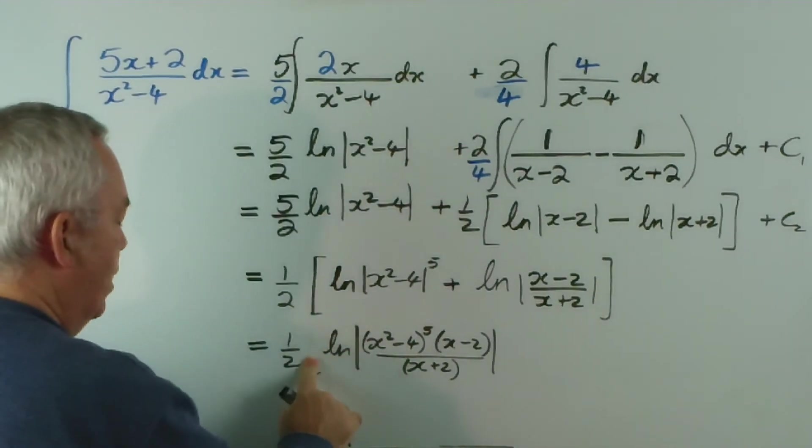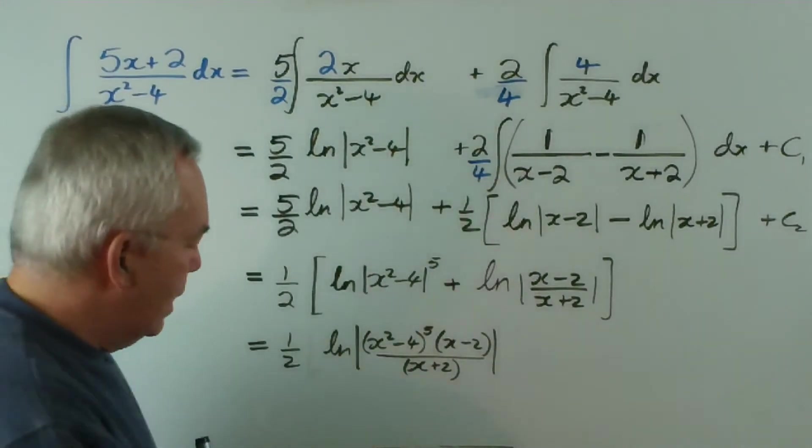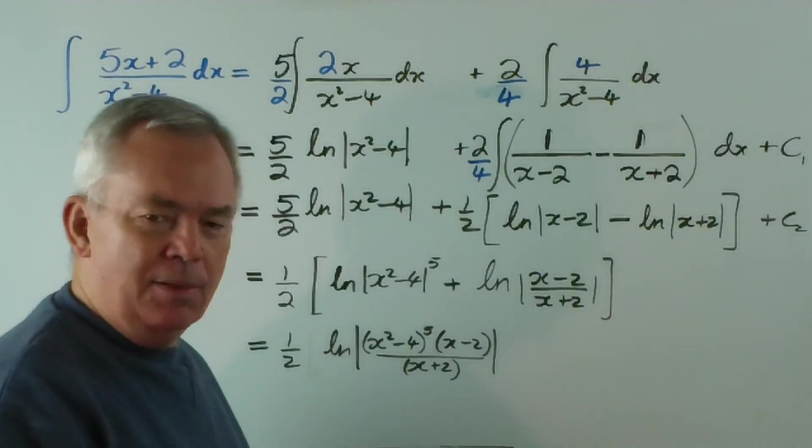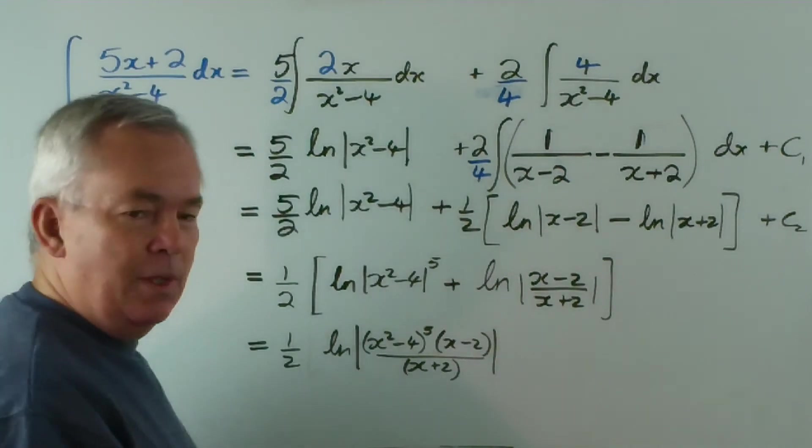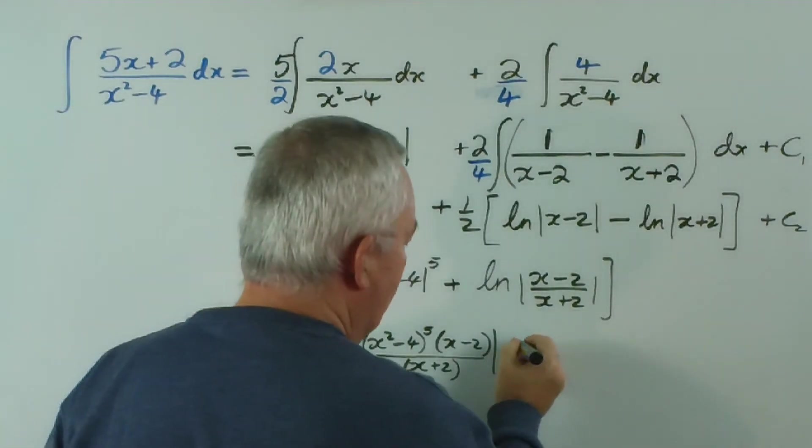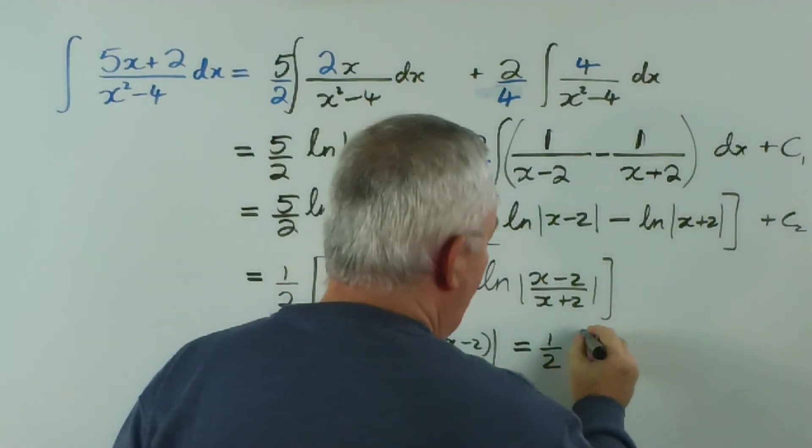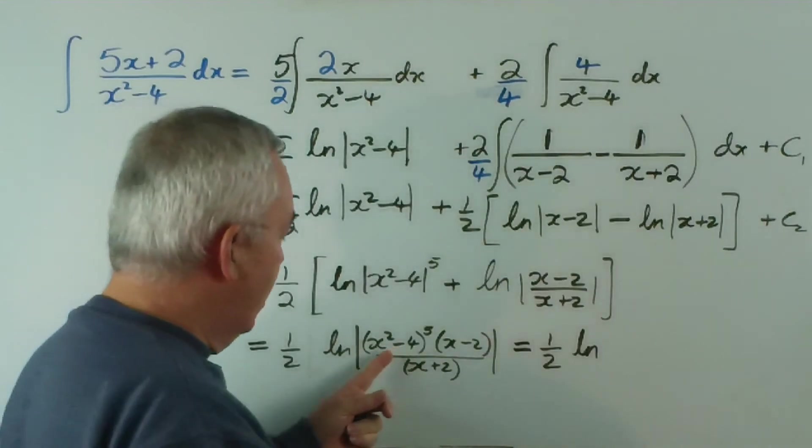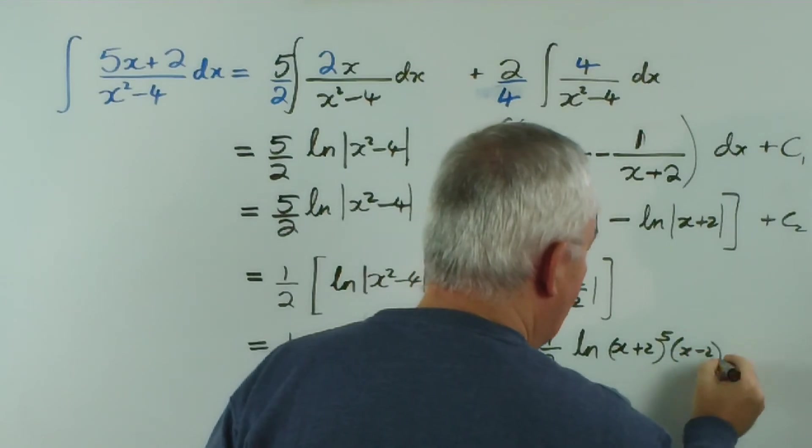And I can combine these. I'm adding the two logarithms, so it means I've got to be multiplying the numbers. Now, we might be tempted to stop there, but this x squared minus 4, we remember, is a difference between squares. Now, I'm running out of room, so I will try and fit it in. I'm just going to go across the page and then hopefully fit the last bit in on the bottom of the board here. Here we have a half logarithm. I'm going to write this as x plus 2 times x minus 2.